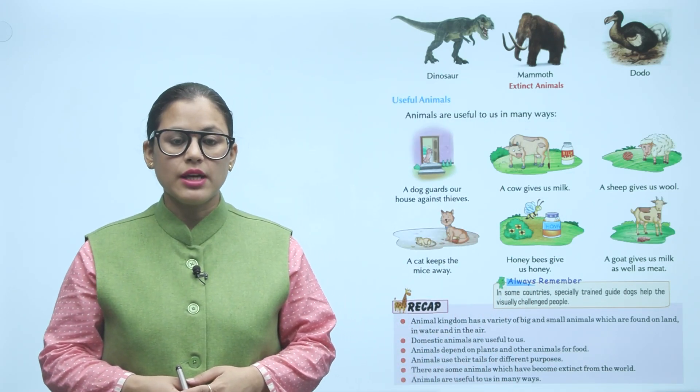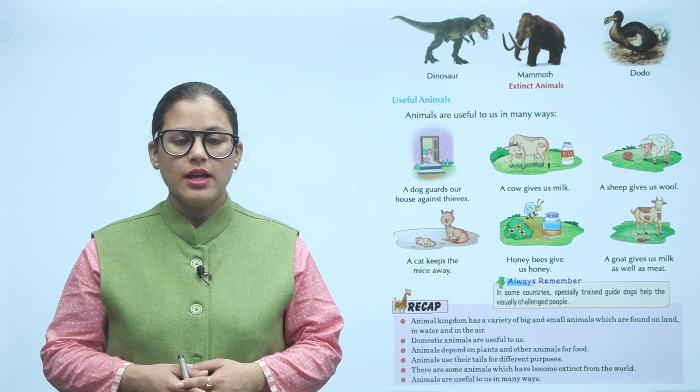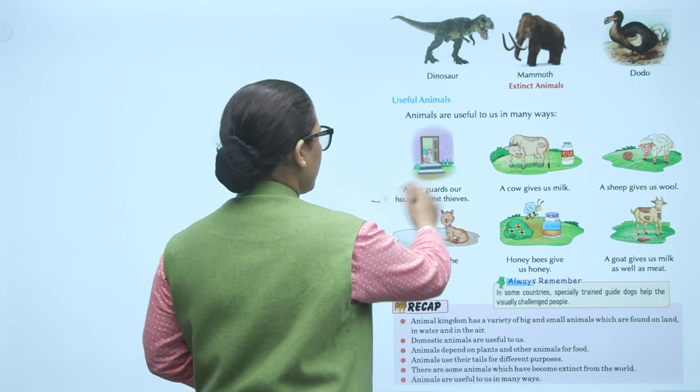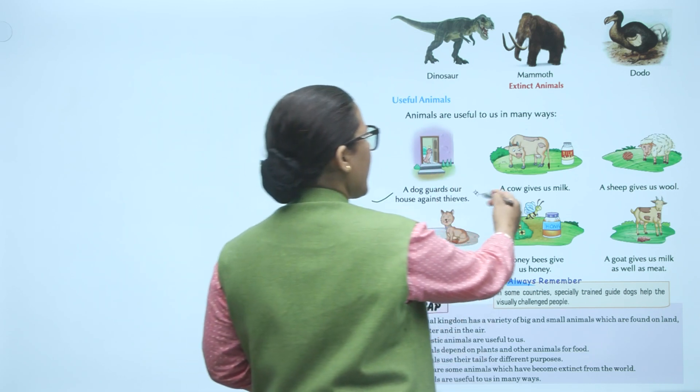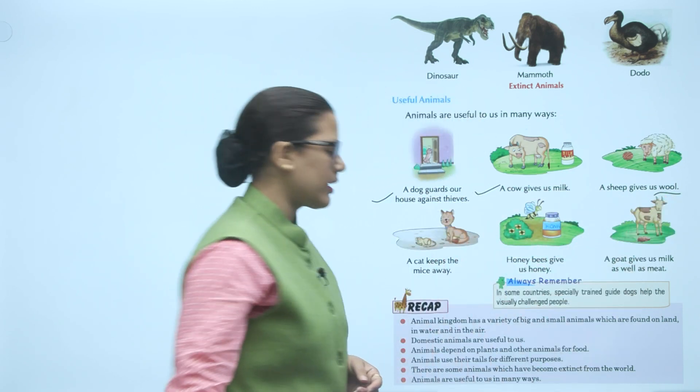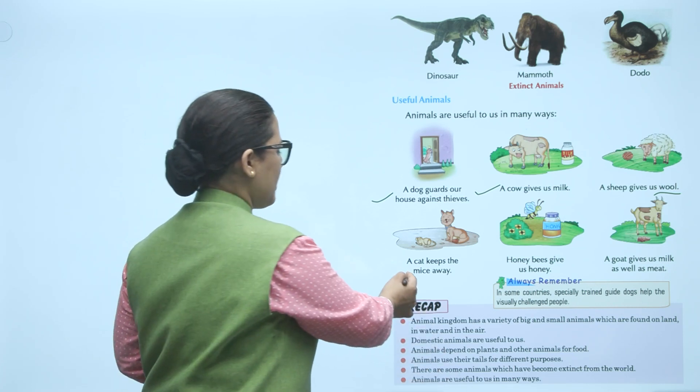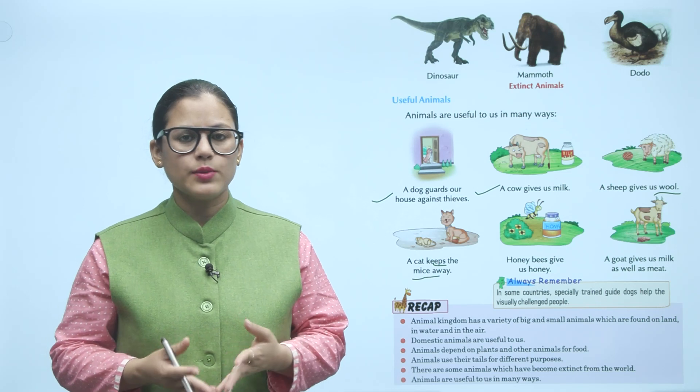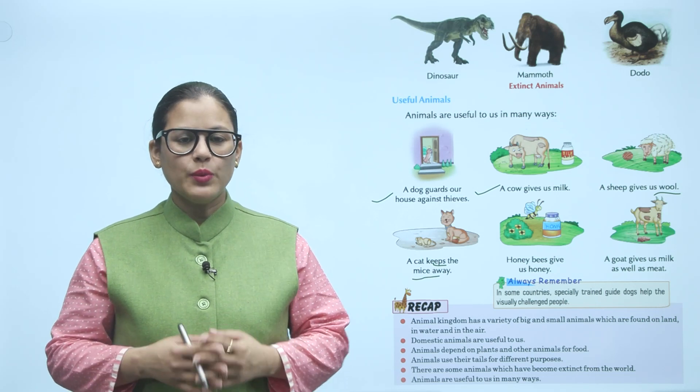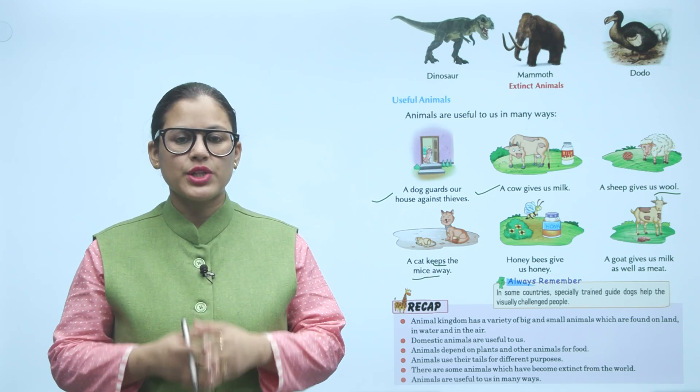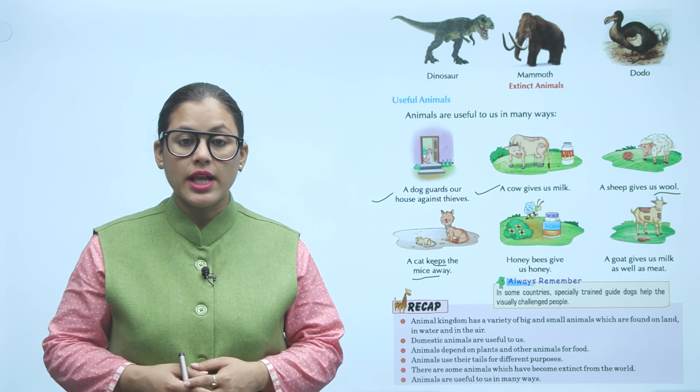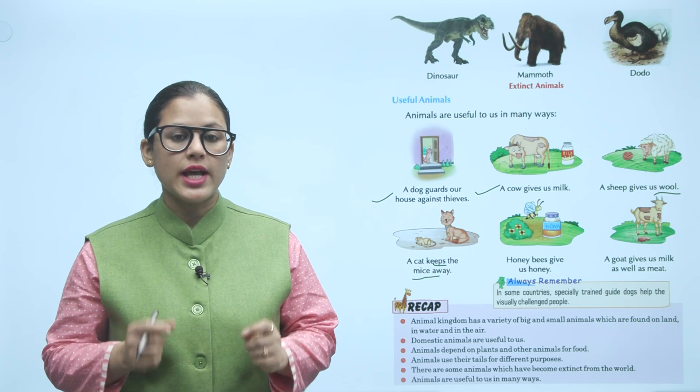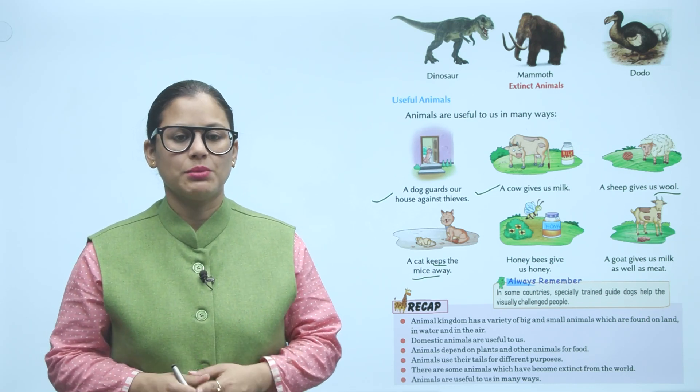Useful animals. Animals are useful to us in many ways. Dogs guard our houses. Cows give us milk. Sheep give us wool. Cats keep the mice away. Honey bees give us honey. Goats give us milk as well as meat. Always remember, in some countries, specially trained guide dogs help the visually challenged people.